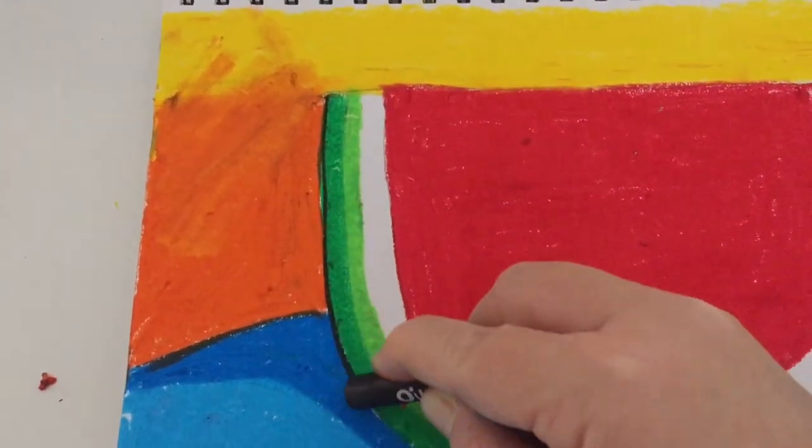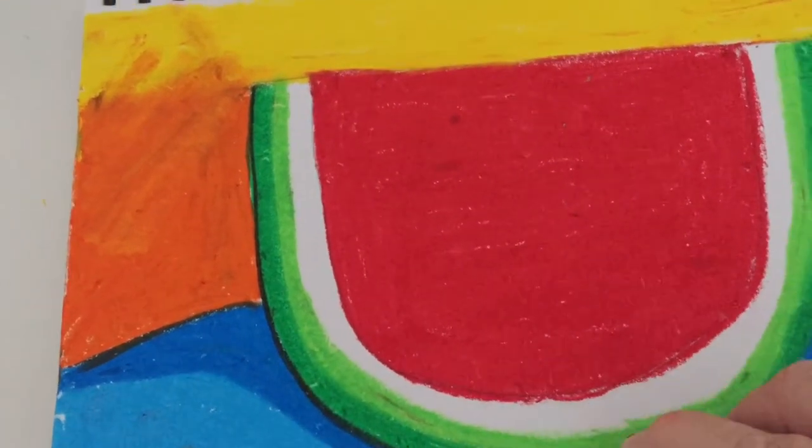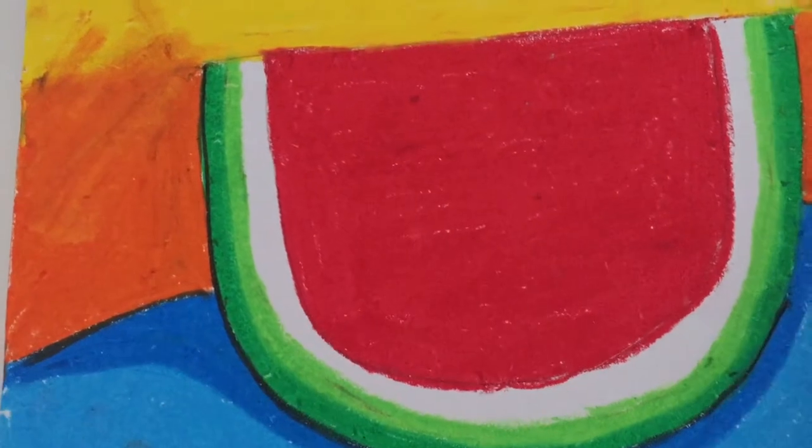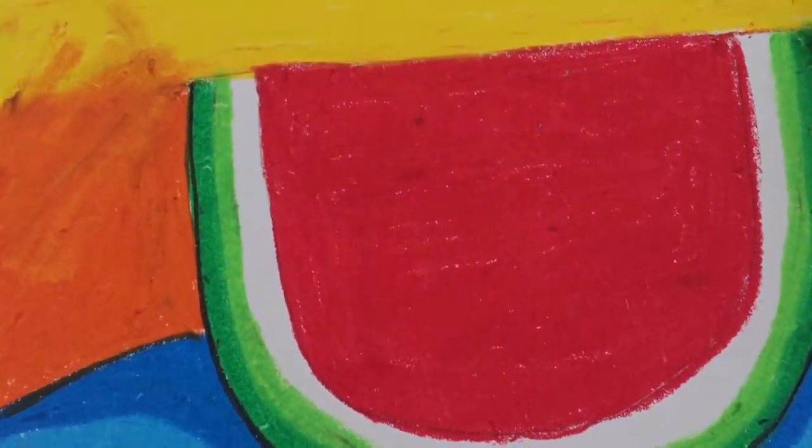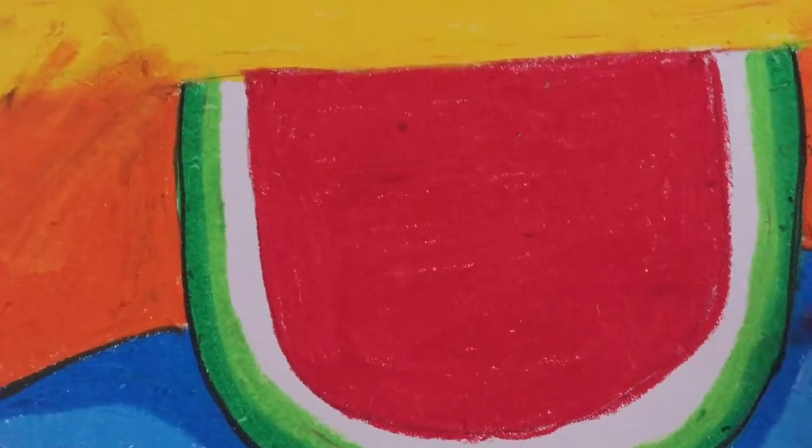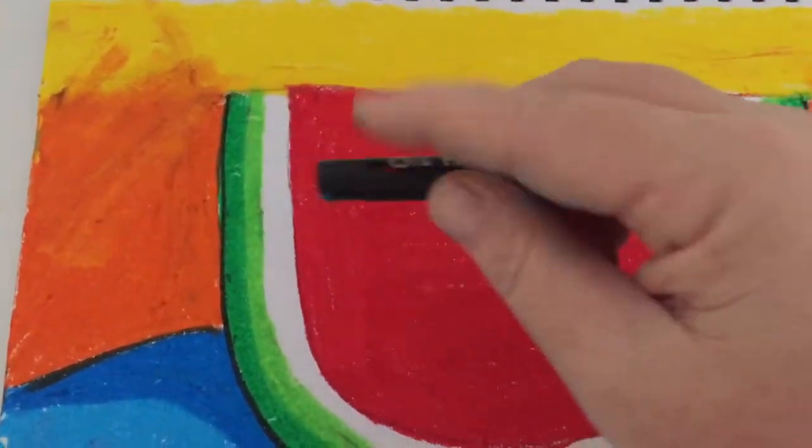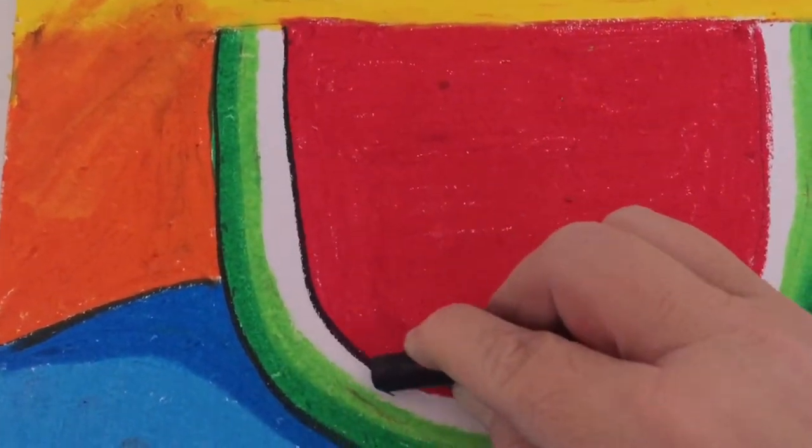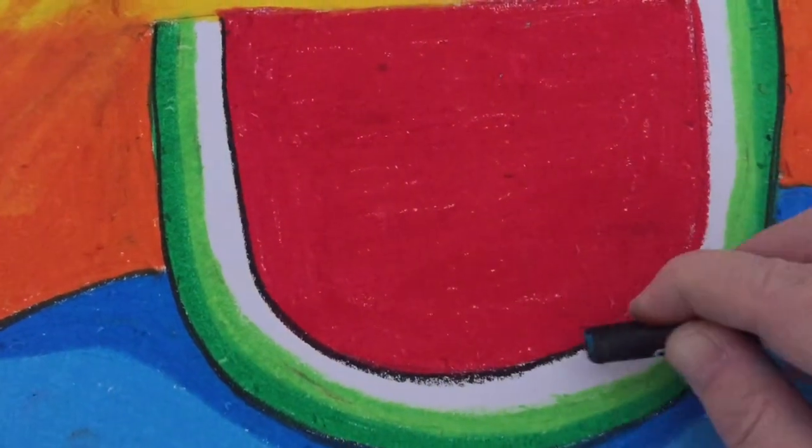I always give everybody a warning about using black because it's very difficult to remove, so really make sure you use a steady hand. I'm tracing around the outside there and also going to trace around the inside part of my red to really make that watermelon slice pop.